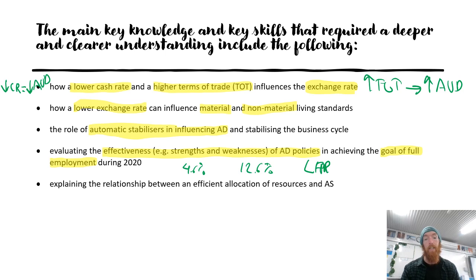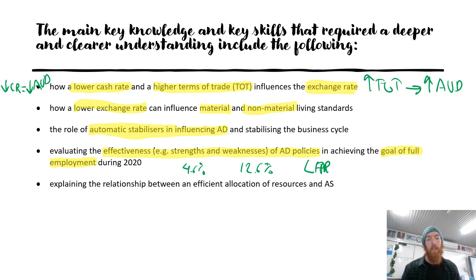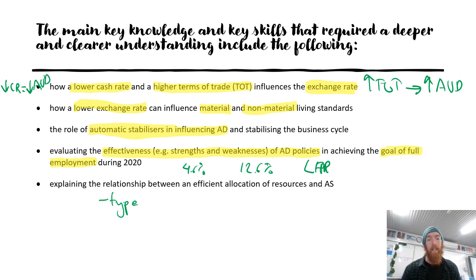Explaining the relationship between efficient allocation of resources and aggregate supply: this was a question on the 2020 exam. You should tie this in with types of efficiency — so two types: technical efficiency and allocative efficiency — and explain how each would impact aggregate supply. For example, if we increase technical efficiency, how that affects aggregate supply; similarly for allocative efficiency.